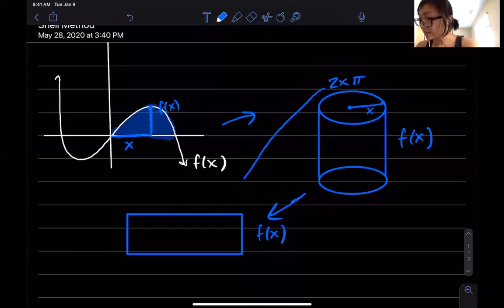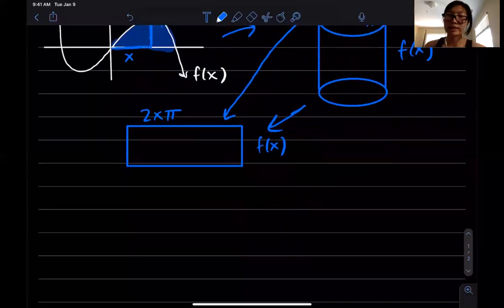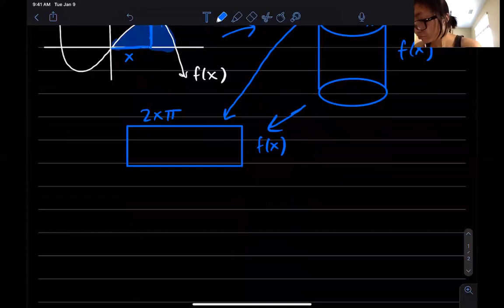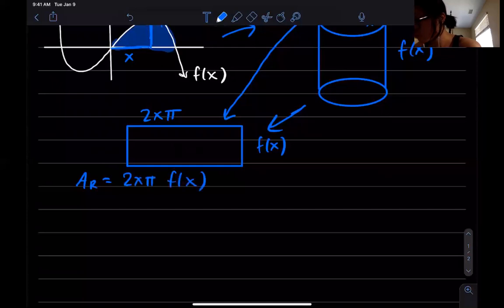What's the area of a rectangle? The rectangle is length times width. So the area of the rectangle is going to be 2x pi times f of x.